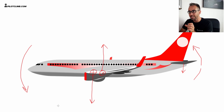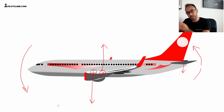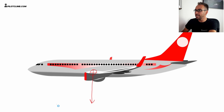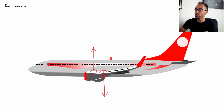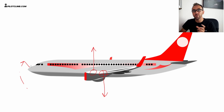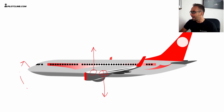Now if you move your center of gravity behind the center of pressure, the opposite is also true. With the center of pressure producing an upward force and the center of gravity producing a downward force behind it, the aircraft will have a tendency to pitch up. This is why it's so important to understand what happens when you move your center of gravity relative to the center of pressure. In that case, the stabilizer would need to produce an upward force to counteract and correct this pitch-up tendency.